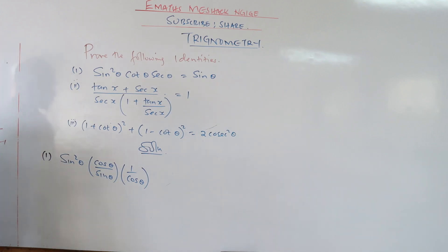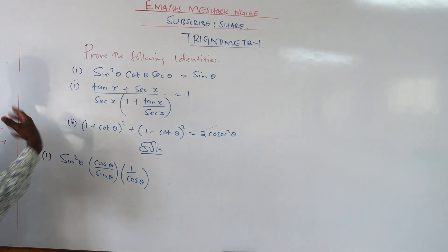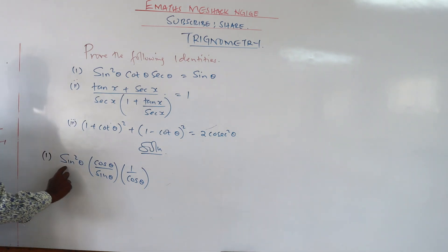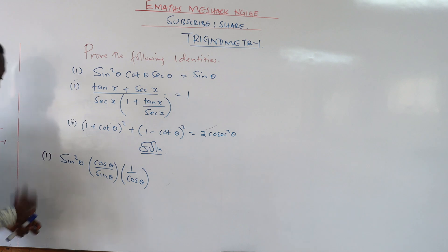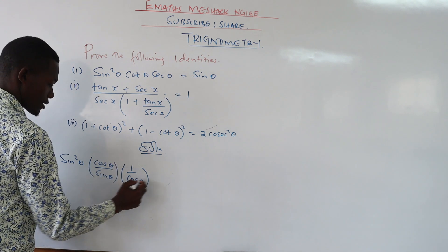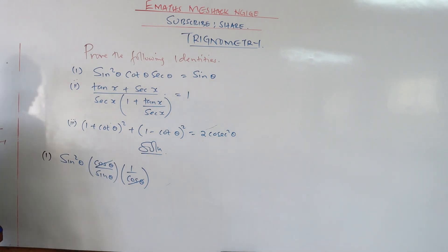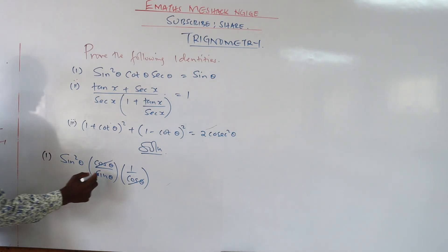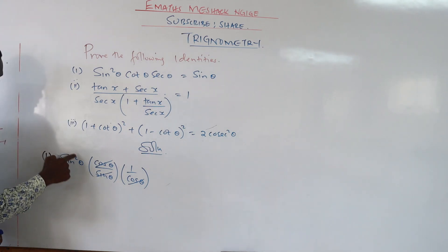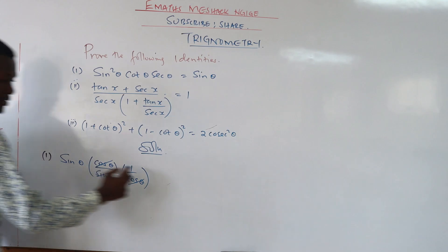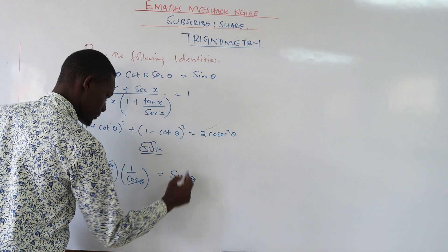Now remember, sine squared theta can also be written as sine theta then squared — meaning these are two sines multiplied together. Then you have cosine over sine and one over cosine. You can cancel cosine with cosine. Then you have one sine in the denominator and two sines in the numerator. Cancel one sine of theta with one sine of theta — and you remain with sine of theta.